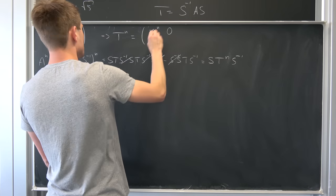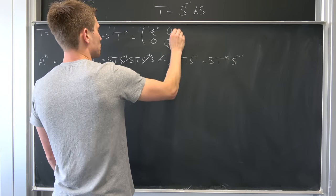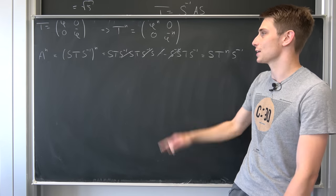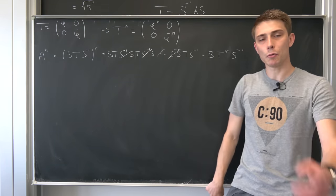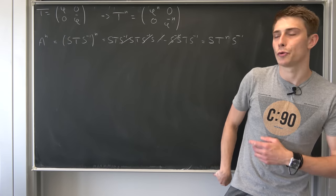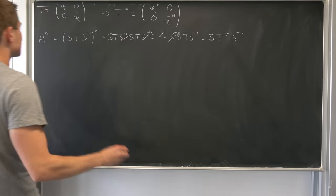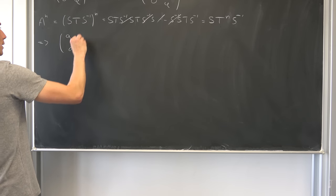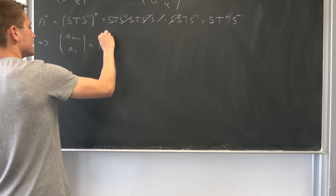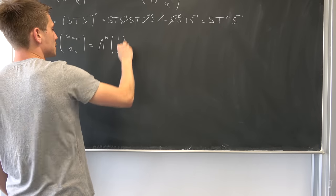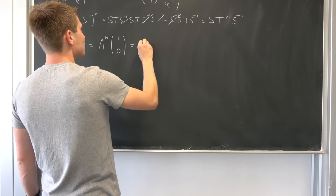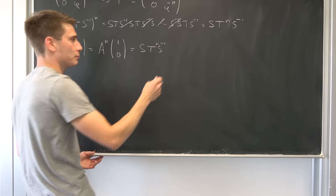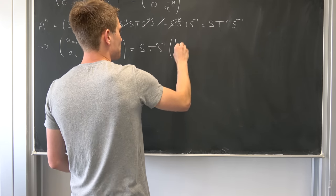T to the nth power is nothing but [[phi^n, 0],[0, phi_conjugate^n]]. And our expression for [a_{n+1}, a_n] is A^n times [1, 0] = S T^n S^{-1} times [1, 0]. Computing S^{-1} times [1, 0] gives [1, -1] (up to the 1/sqrt(5) scalar).